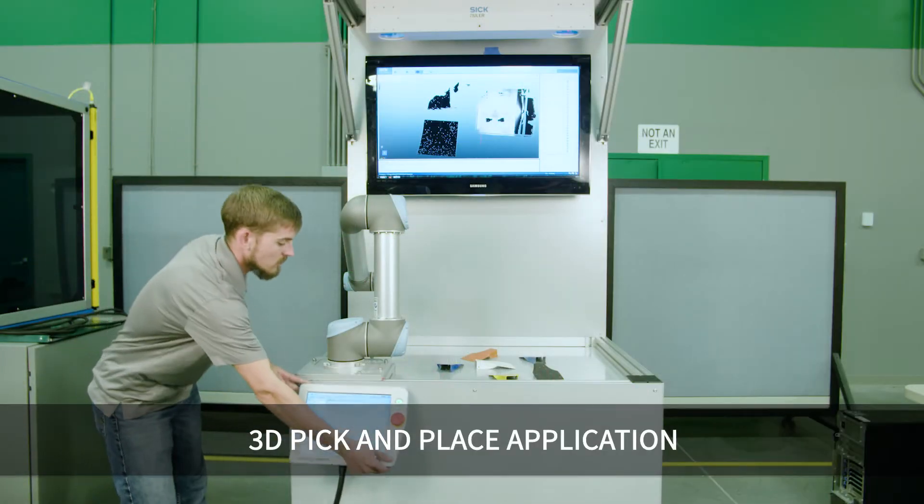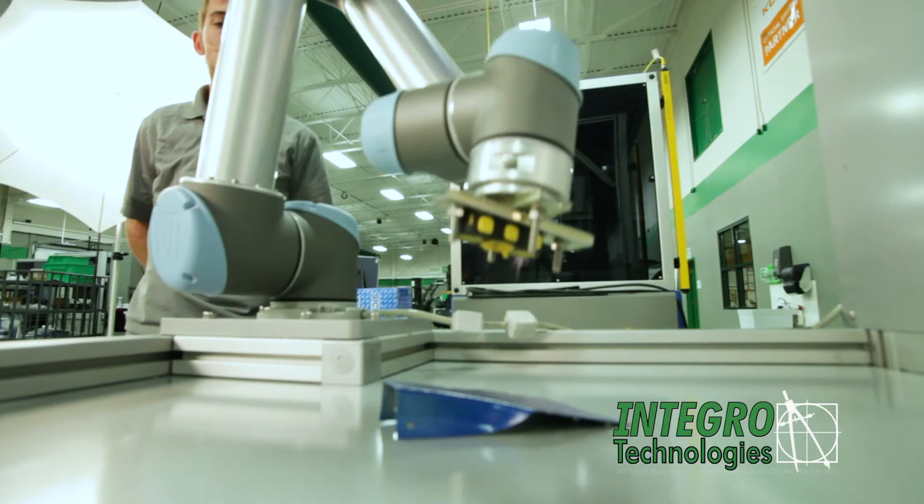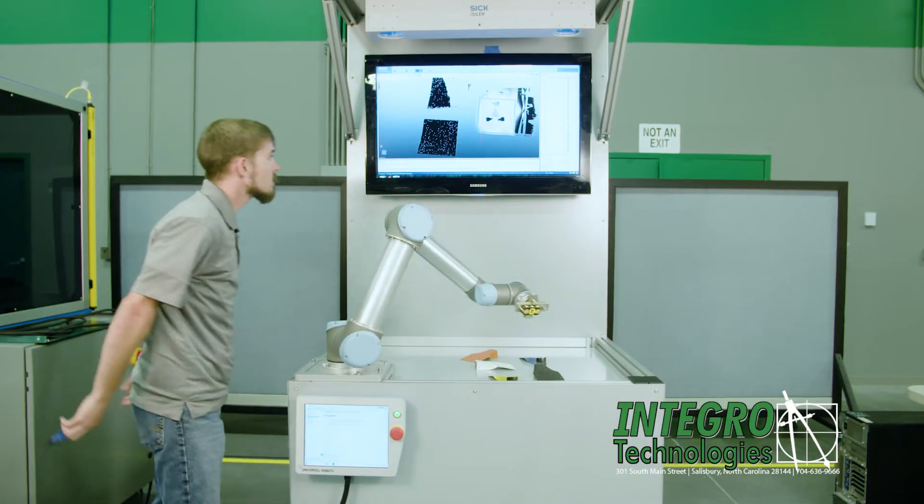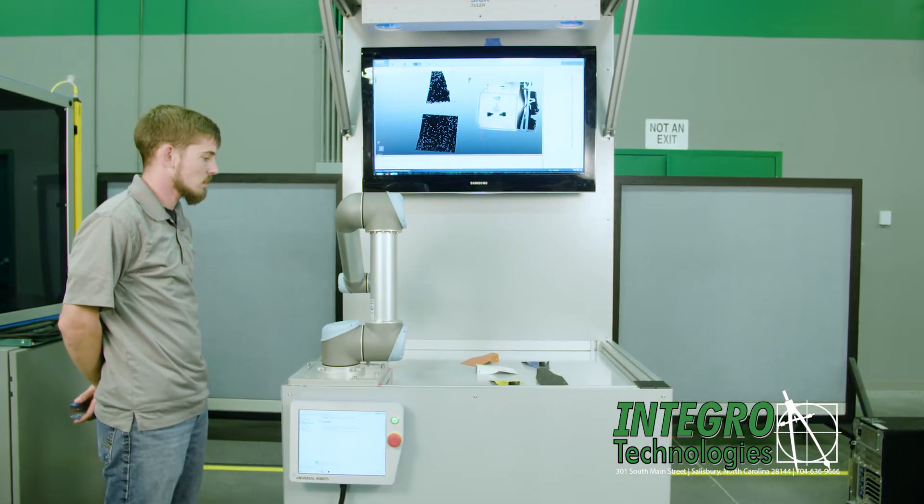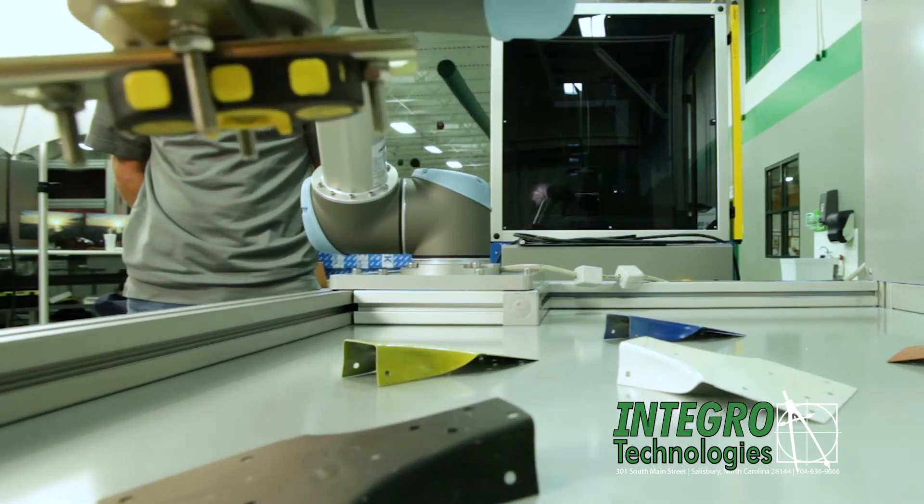Integro Technologies has developed a new 3D Vision guided application for random bin picking. The combination of the Universal robot arm with 3D Vision CAD import compatibility provides a modular, fast, and highly flexible work cell with minimal software configuration steps to add and qualify new products or assemblies.